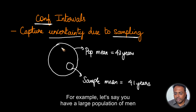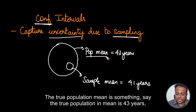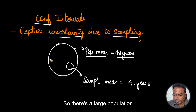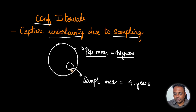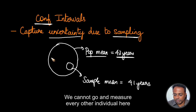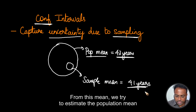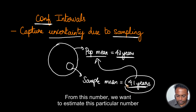For example, let's say you have a large population of men and you want to find their mean age. The true population mean is something — say the true population mean is 43 years — which is something we may not know. Now we want to estimate this true population mean by taking a small sample. We take a small sample and then measure the mean of this sample. From this mean, we try to estimate the population mean.